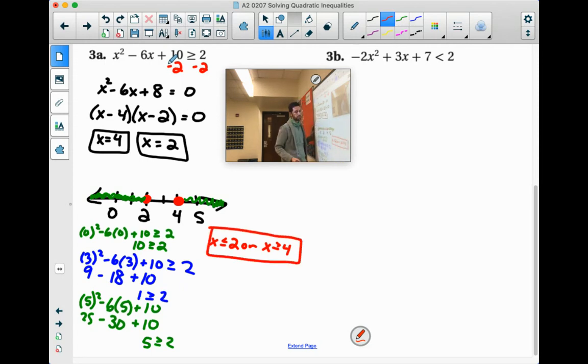If you were to write that in interval notation, that would be negative infinity to 2 with a bracket. And we got our union. And then it starts again at 4 and goes towards positive infinity.